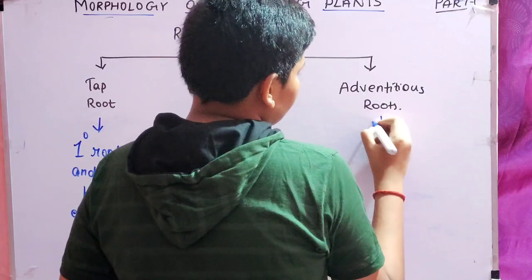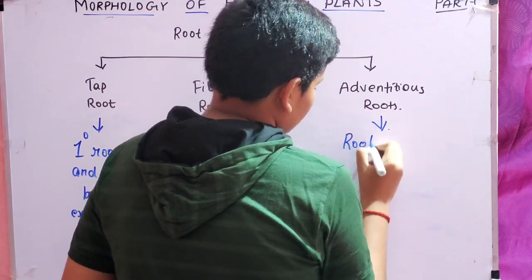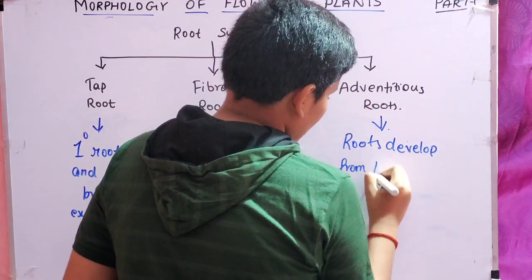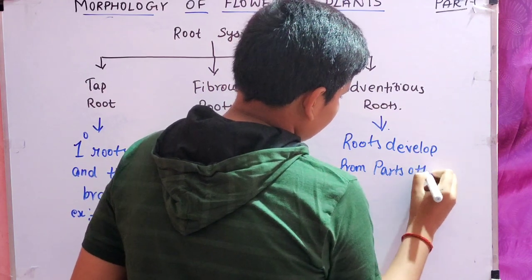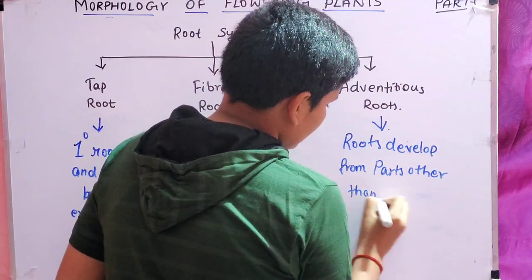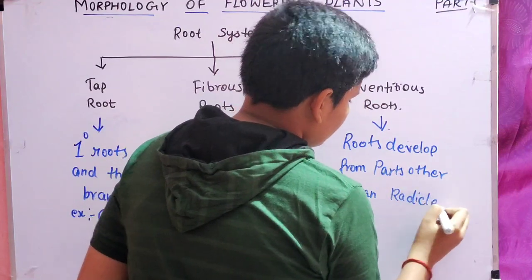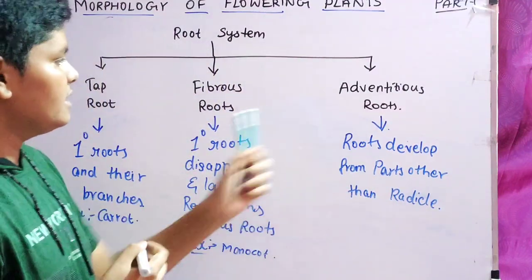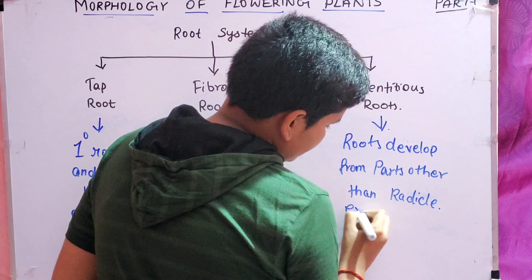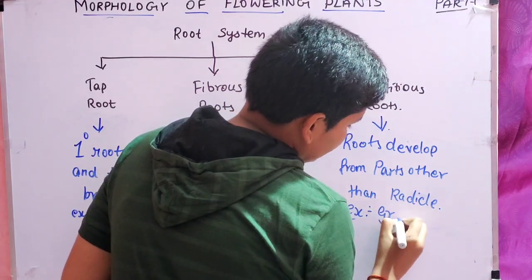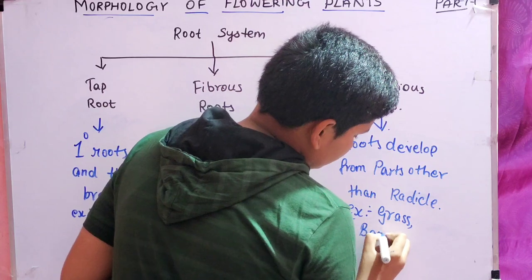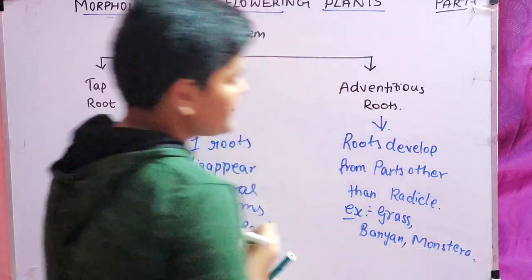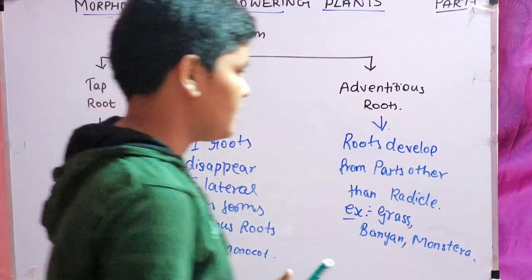Adventitious roots are a little bit interesting. Roots develop from parts other than the radicle. So adventitious roots are the roots that develop from parts other than the radicle. Examples given in books are mostly grass, banyan, and Monstera.